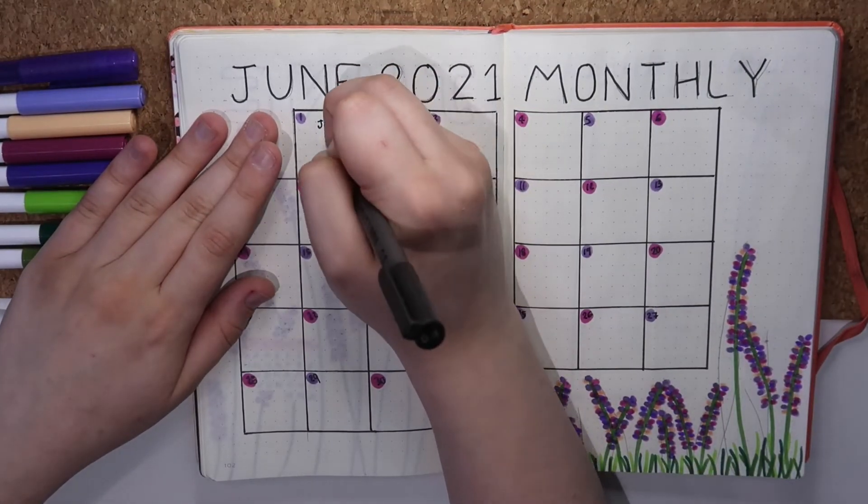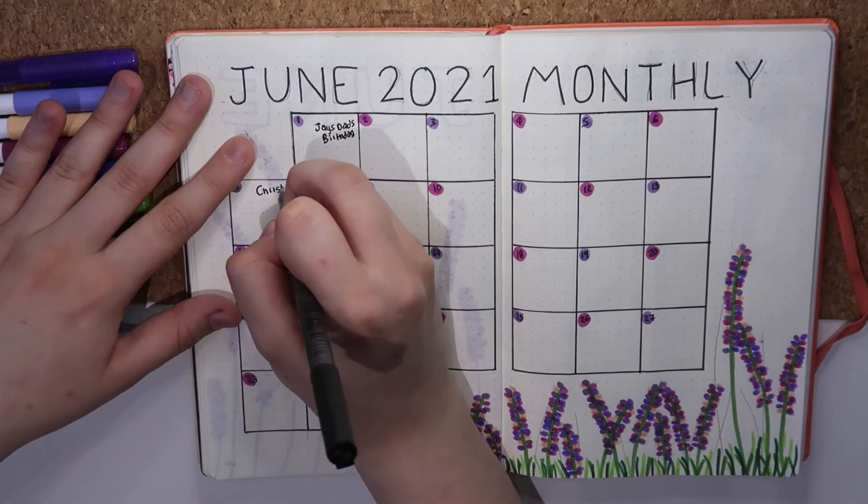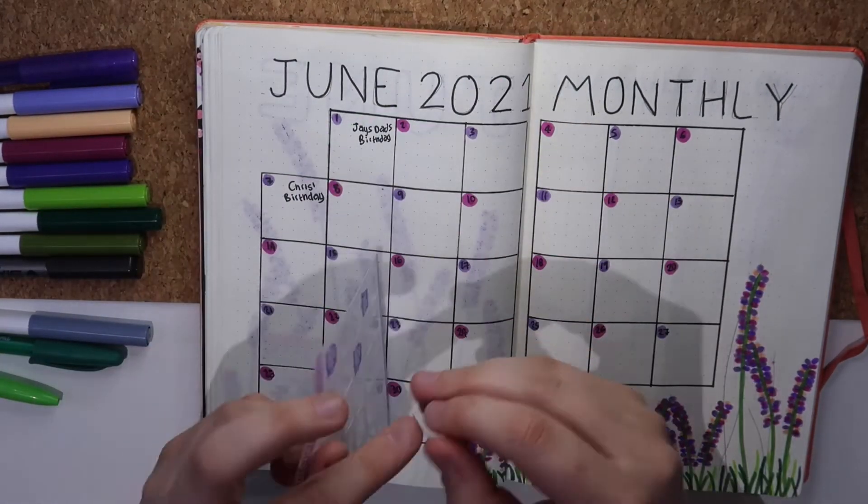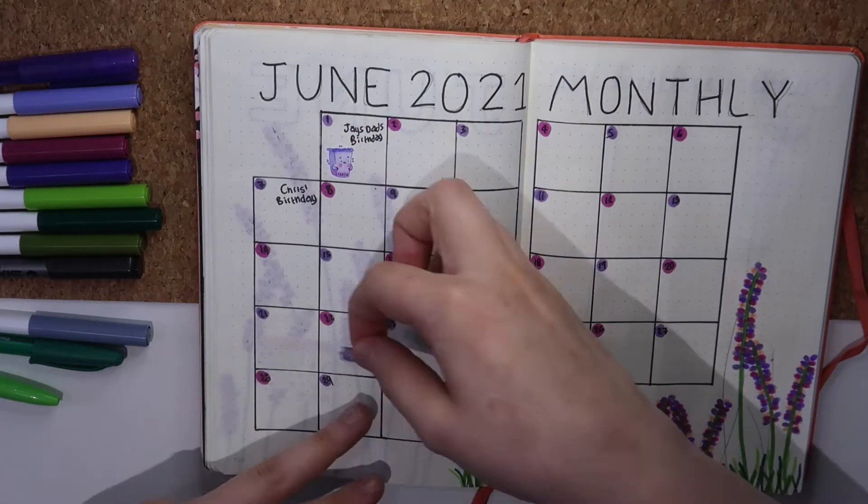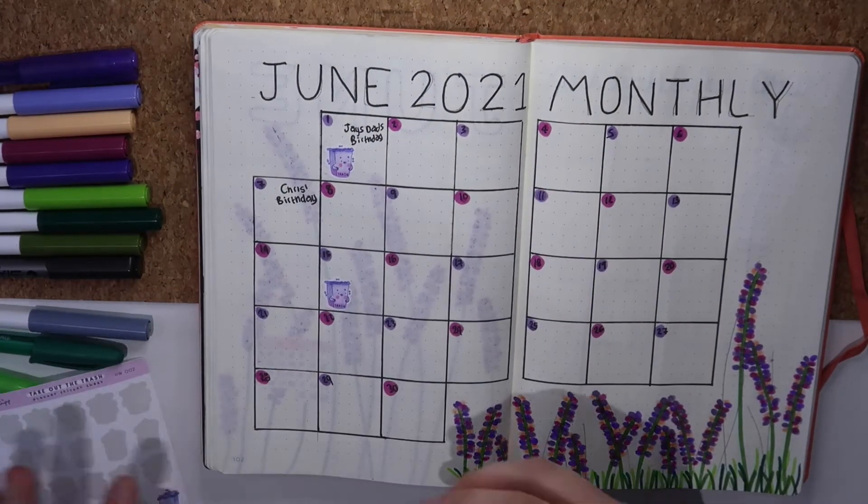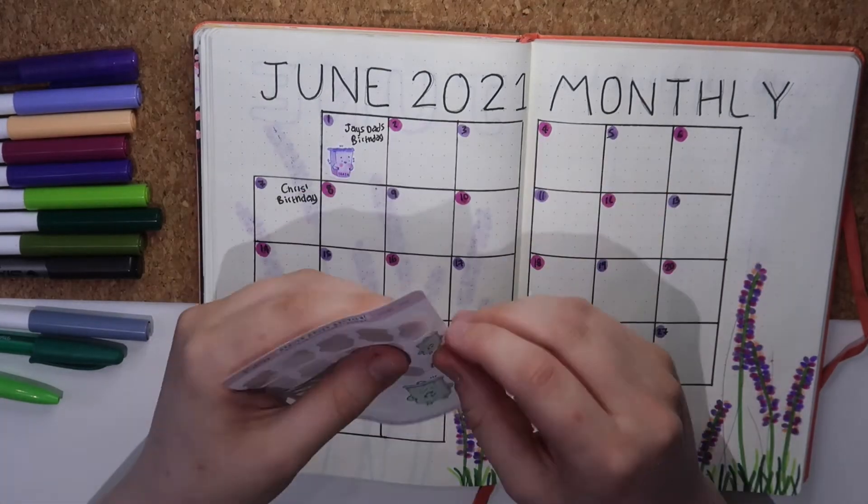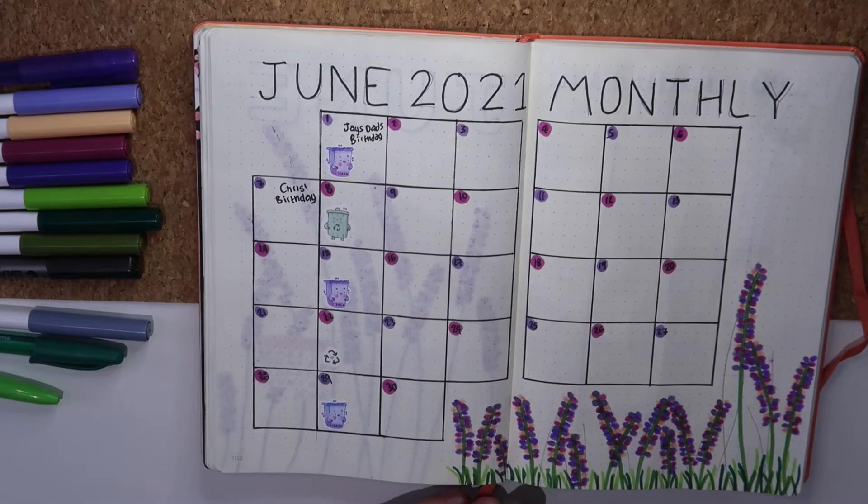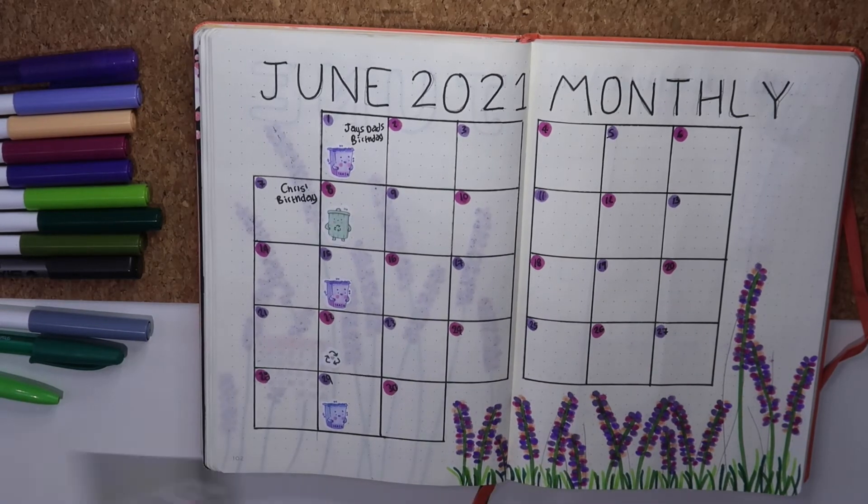Now onto the stickers. I use these rubbish and recycling stickers, which I will unfortunately run out of this month. I got these from Catnip on Etsy. However, when I last looked, they are no longer being sold. I then use these weight scales for weekly weigh-ins, which are again from Etsy but are a digital download so I can reprint and recut whenever I run out.